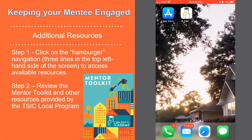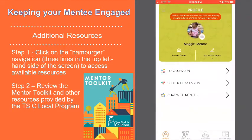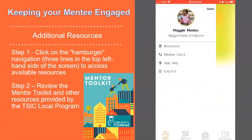There are two steps to accessing the available resources on the app. Step one, click on the hamburger navigation. This is the three lines in the top left hand side of your screen to view additional menu items. Step two, you will then be able to review the mentor toolkit and any other resources provided to you by your local TakeStock and Children program.